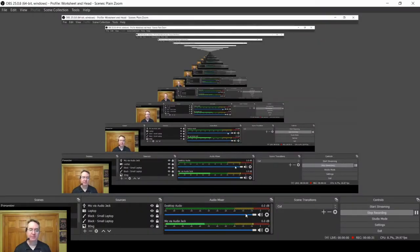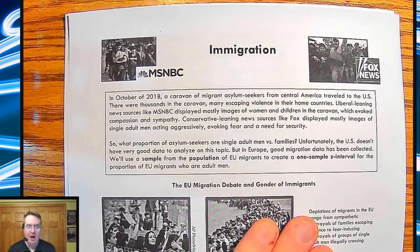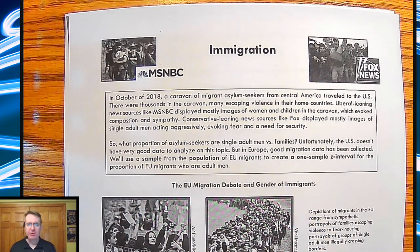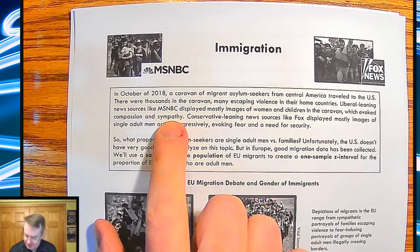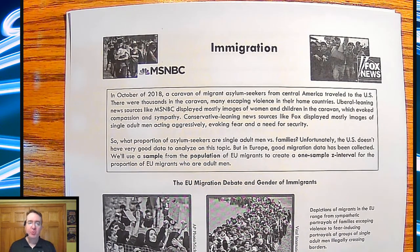So jumping into things. If you remember back in October of 2018, there was this caravan coming from Central America up through all the countries there and up through Mexico with the destination being the U.S. And so some of them, this goes through and talks about how liberal-leaning news sources like MSNBC mostly displayed sympathetic views of women and children, while things like Fox News and other outlets that leaned more conservative tended to show a bunch of men in their pictures to helpfully evoke fear, need for security, things like that.